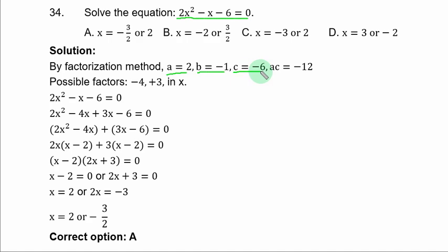And by this method, whenever A is not equal to 1, you look for AC, that is the product of A and C, 2 times minus 6, that is minus 12. Now, your attention is now on 12, not 6. So you look for two factors of 12, that the sum is minus 1 in x and the product is minus 12. Such factors are minus 4 plus 3 in x.